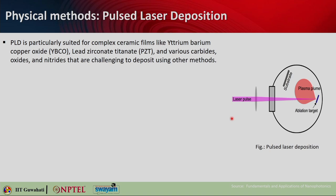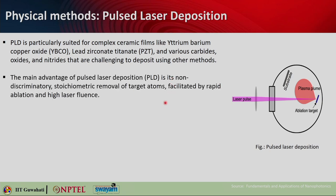The main advantage of PLD is its ability to remove target materials in a stoichiometric manner, treating all atoms equally due to high laser fluence and rapid ablation, allowing deposition of uniform films. PLD is particularly suited for complex ceramic films like yttrium barium copper oxide (YBCO), lead zirconate titanate (PZT), and different carbides, oxides, and nitrides that are challenging to deposit using other methods. The non-discriminatory nature of PLD gives stoichiometric removal of target atoms from the entire target very quickly. With that, we more or less cover all the basic physical methods of depositing thin films.